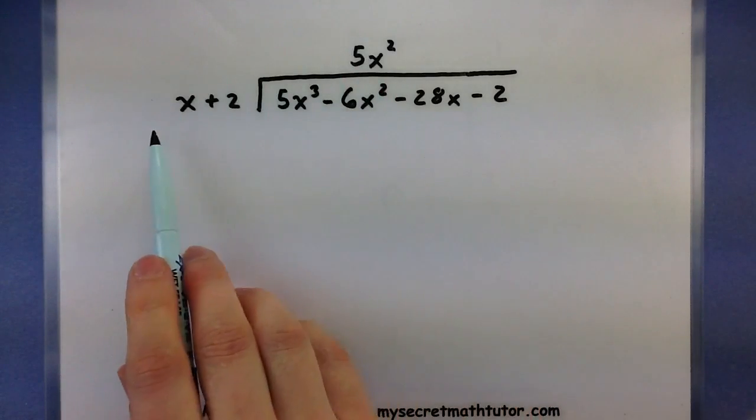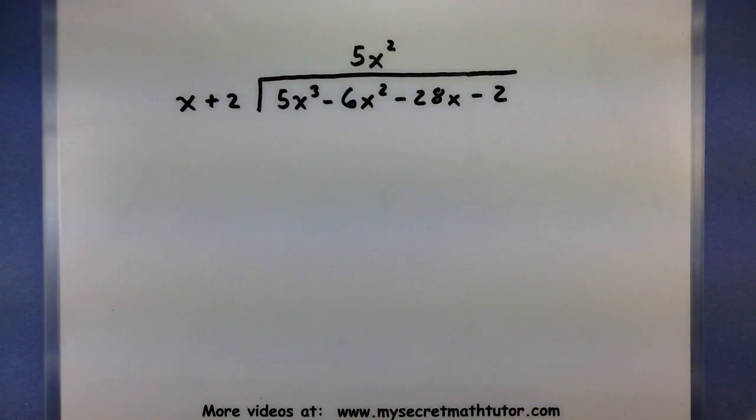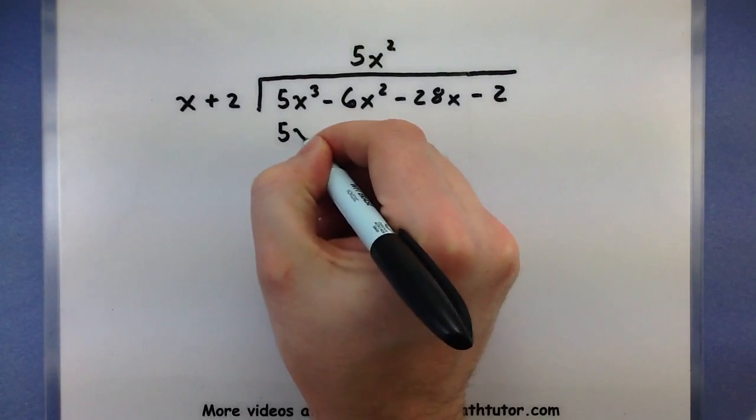So let's double check this. 5x² times x indeed does give us a 5x³. So I'm going to write that right underneath this one.